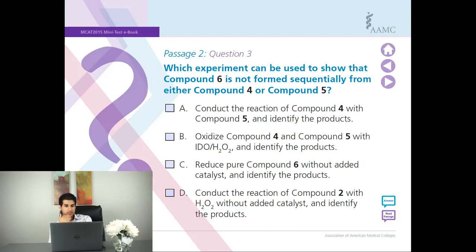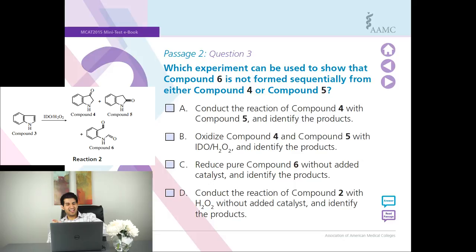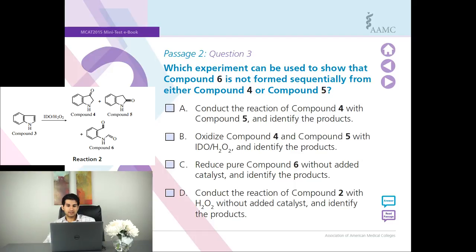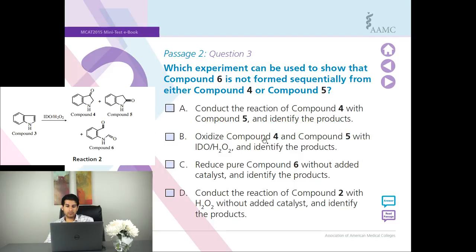Question three: what experiment can be used to show that compound 6 is not formed sequentially from either compound 4 or compound 5? That would mean compound 4 or compound 5 goes through an enzymatic reaction to create compound 6. Answer choice A says conduct the reaction of compound 4 — so they're saying react the two — that makes no sense. Answer choice C says oxidize compound 4 and 5 — this is kind of an enzymatic step to try to find compound 6, where compound 4 with an enzyme would act on it and try to make compound 6, or make something else which isn't compound 6, proving compound 6 is not formed from it. That's a possibility.